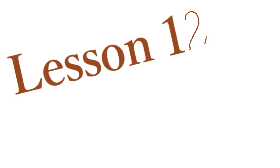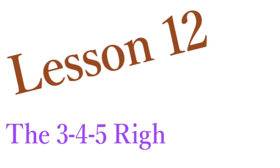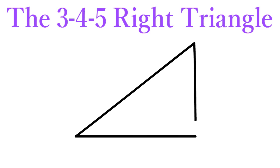Lesson 12. The 3-4-5 Right Triangle. You already know that a right triangle is a triangle with one right angle. One very common right triangle is called the 3-4-5 Right Triangle.